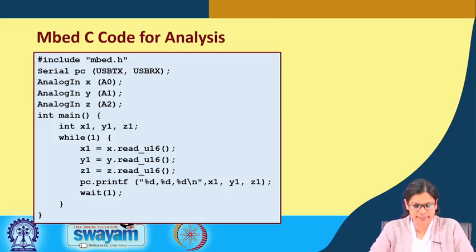Let us understand the embed C code. This says that we have to include the embed library embed dot h. First thing we have to make the serial communication with the USB TX and USB RX with the communication name as PC. We defined three analog input signals here, one is analog in x, the name we are giving it as x which will be connected to port pin number A0 of the STM board.